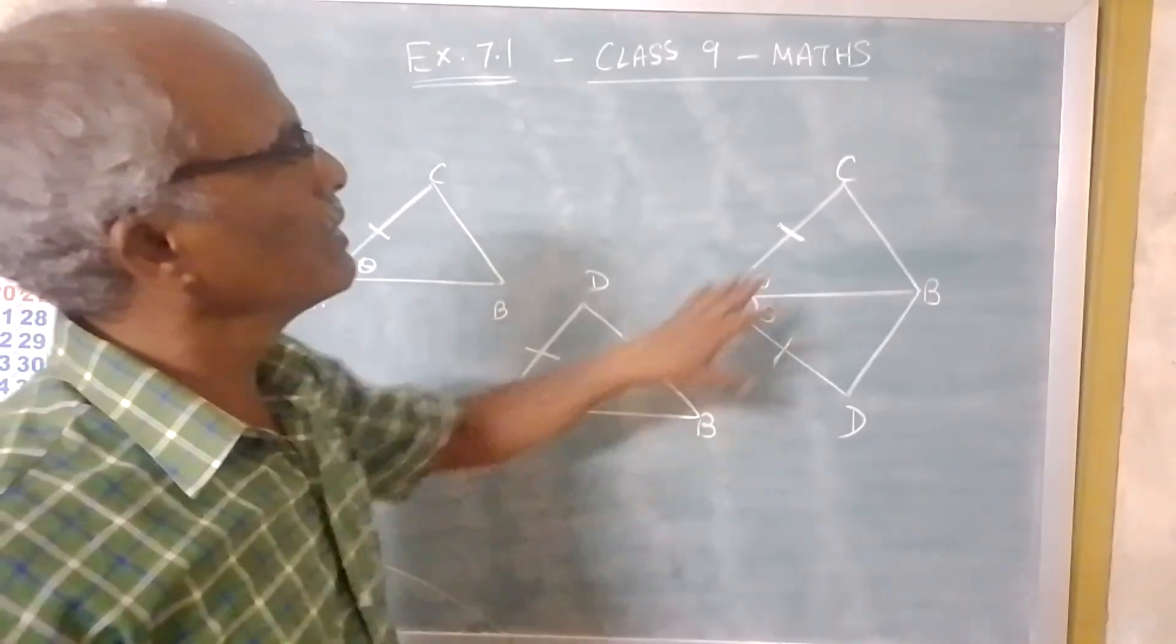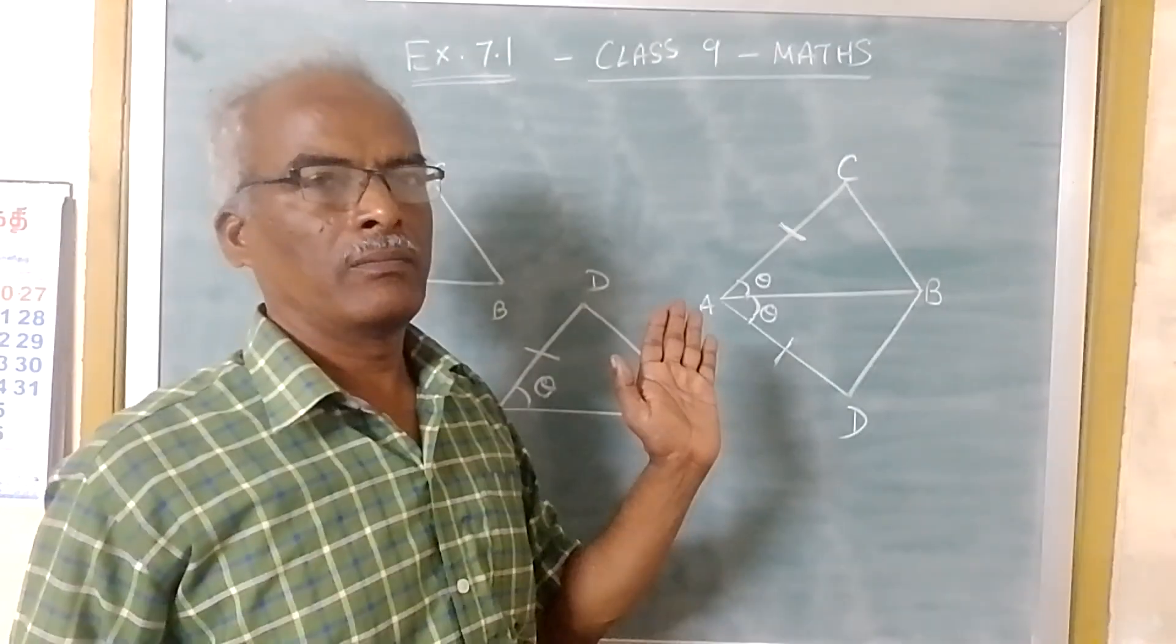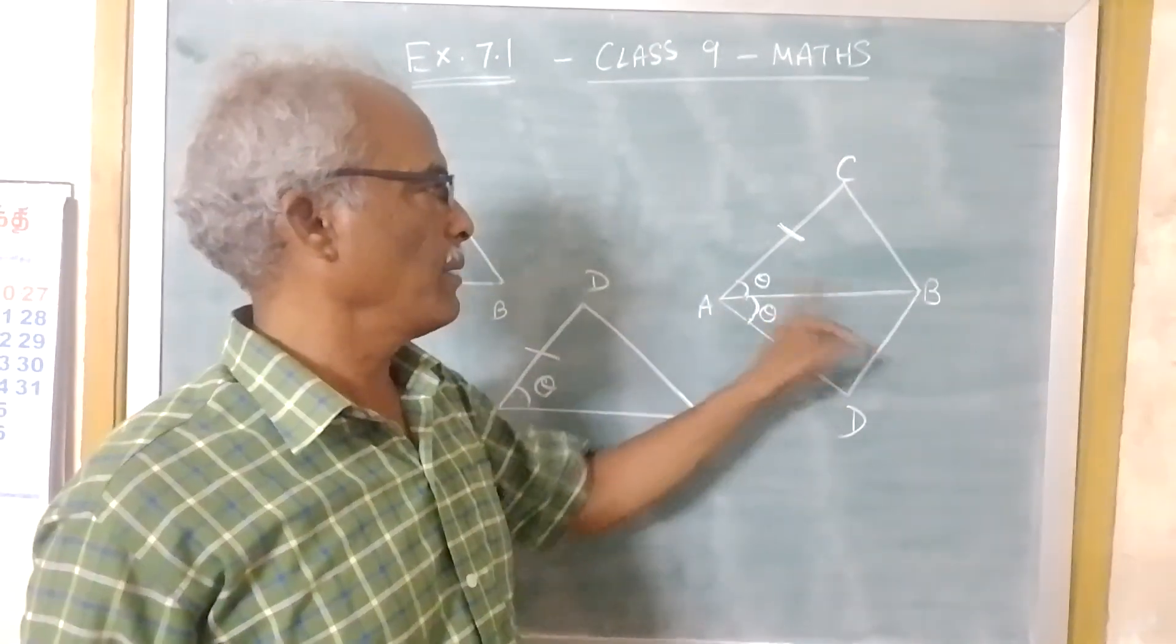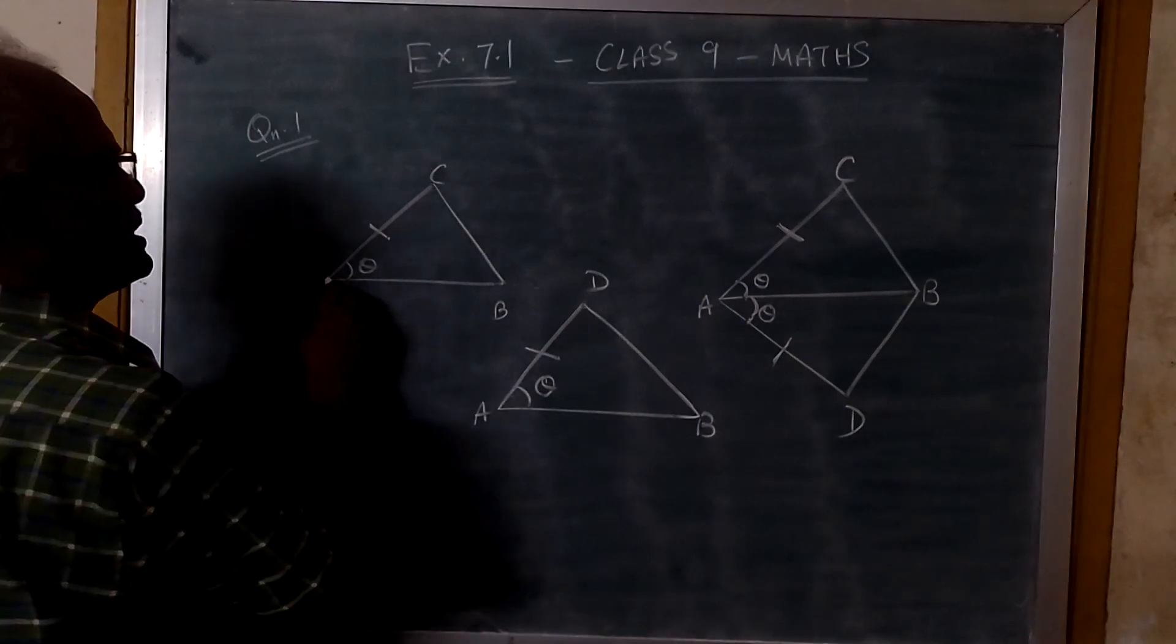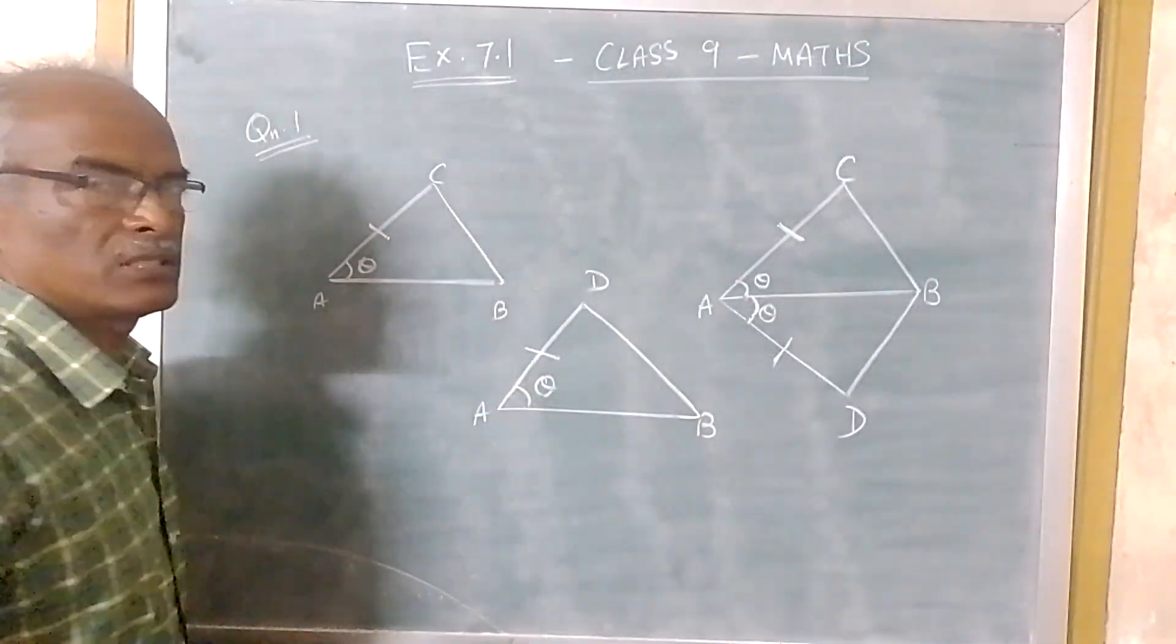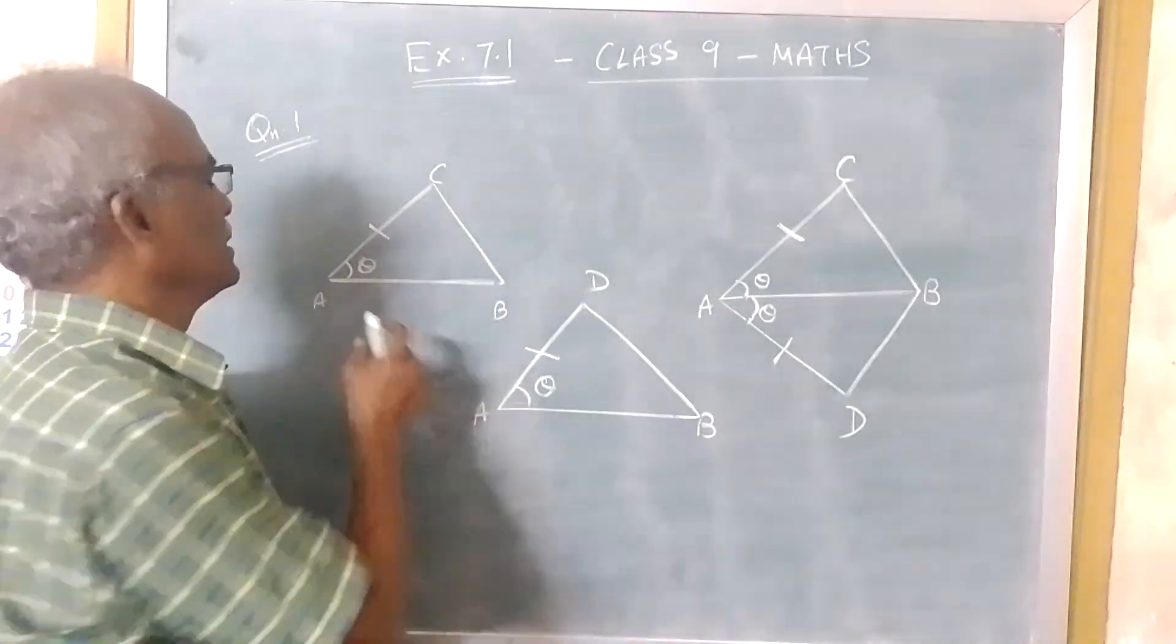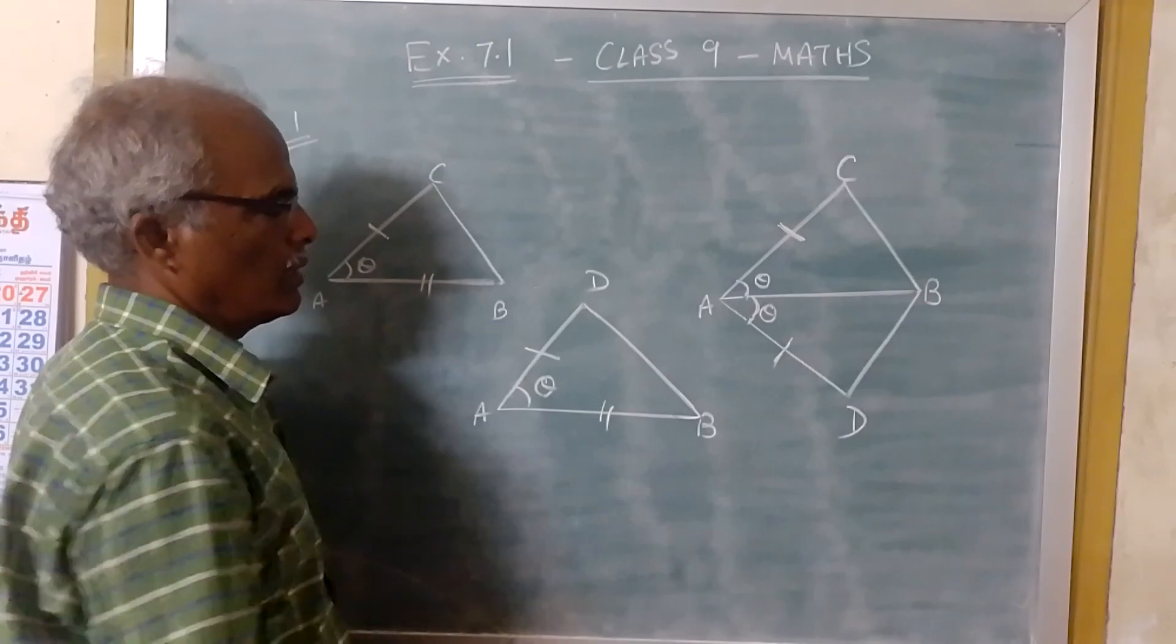That means for the given quadrilateral, we have drawn separately the two triangles ABC and ABD. Now if you see this AB, here also AB, here also AB. That means both the AB, so this length and this length are equal.